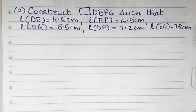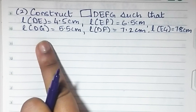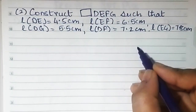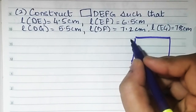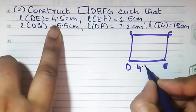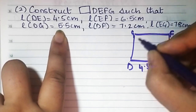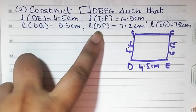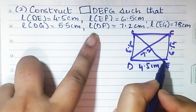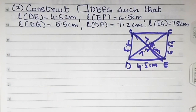Now let's do sum number two: construct quadrilateral DEFG such that DE is 4.5 cm, EF is 6.5 cm, DG is 5.5 cm, DF is 7.2 cm, and EG is 7.8 cm. Notice no angles are given — all sides are given. Let's draw the rough diagram first: DEFG, with DE = 4.5, EF = 6.5, DG = 5.5, DF = 7.2, and EG = 7.8 centimeters.